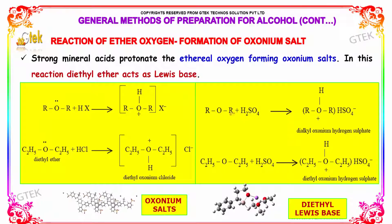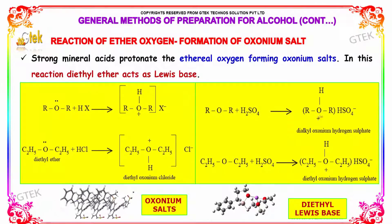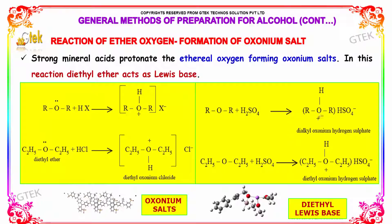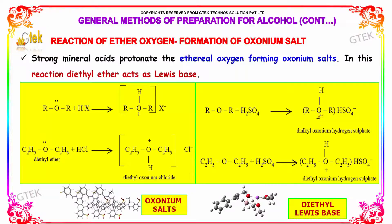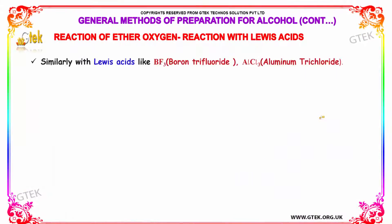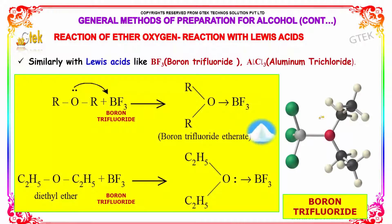Similarly, when ROR, that is general ether, is reacted with H2SO4, it results in the formation of dialkyl oxenium hydrogen sulfate. Similarly, with Lewis acids like BF3, that is boron trifluoride, or aluminium trifluoride, this results in the formation of boron trifluoride etherate.